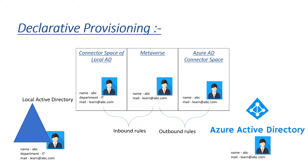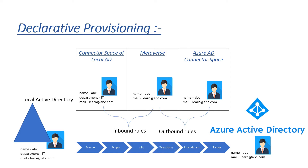Before this entire process is completed, there is a logical reference — think of it as a pipeline — which every object, whether a group or a user, goes through. This particular process has six phases: source, scope, join, transform, precedence, and target. The information related to these six phases is mentioned in the declarative provisioning public article of Microsoft.